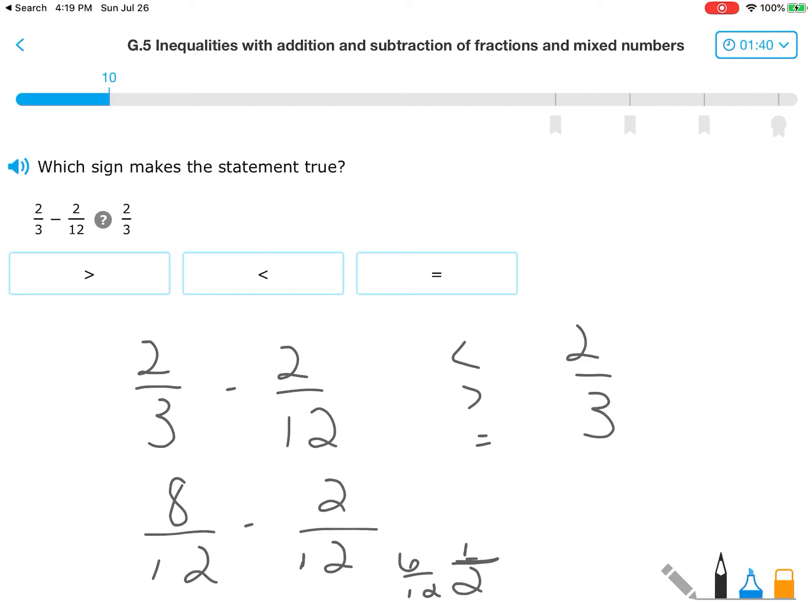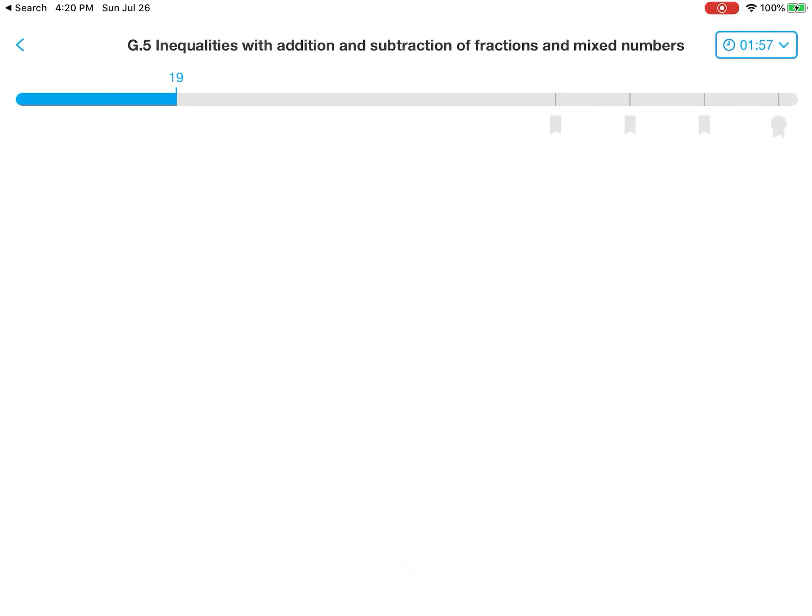But you should also know this is pretty obvious. If you have two thirds here, and here we have two thirds but we're taking something away from it, this side's obviously going to be smaller because you took something away from two thirds. So don't overthink the problems or make them more work than they really are.